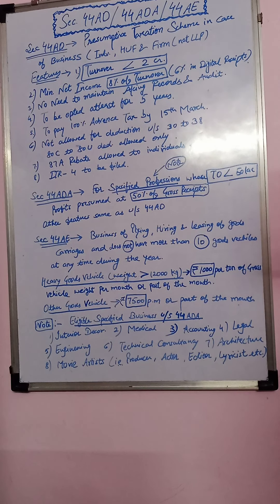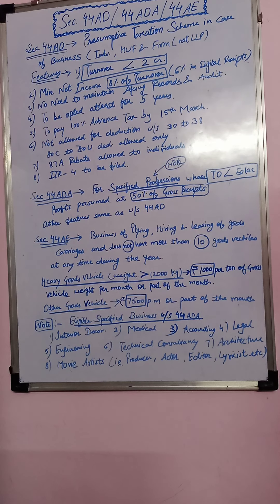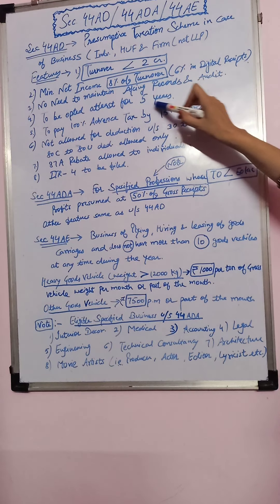Fourth, to be opted at least for 5 years. If once you are opting this Section 44AD scheme, then you have to opt this continuously for the next 5 years.